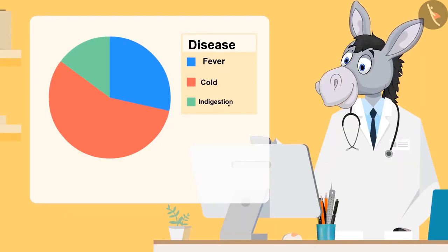Very good. As you can see in the chart, number of children who got sick due to cold are represented by red color, number of children who got sick due to fever are represented by blue, and the number of children who got sick due to indigestion are represented by green color.